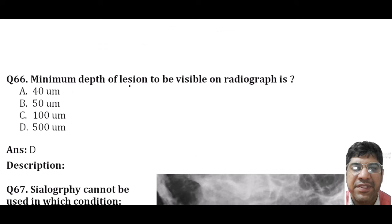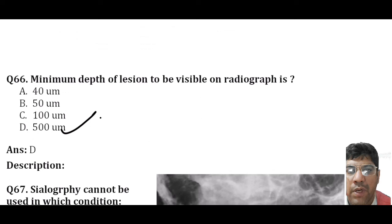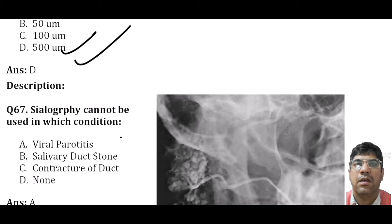The minimum depth of a lesion to be visible on a radiograph is 500 micrometers. Although radiographs may show caries not visible clinically, the minimum depth of a detectable lesion on radiograph is 500 micrometers.